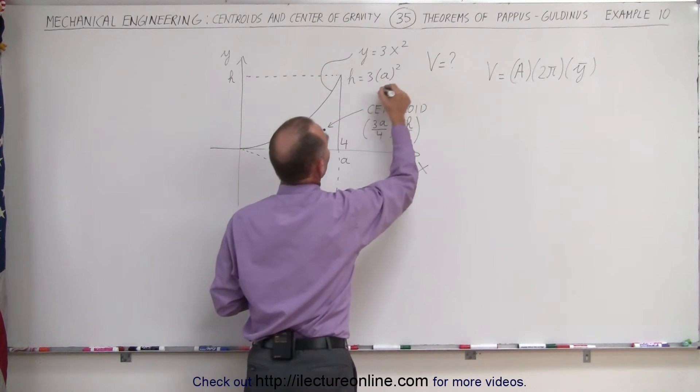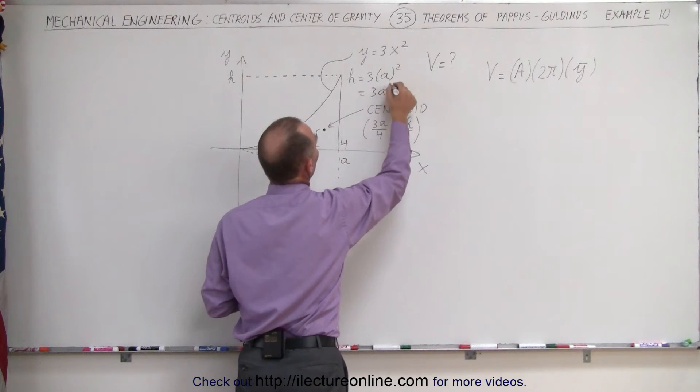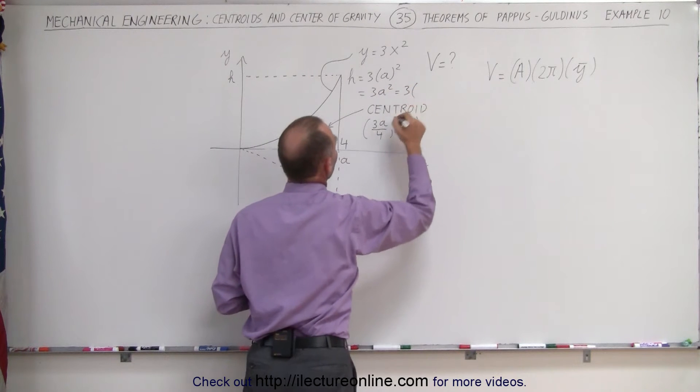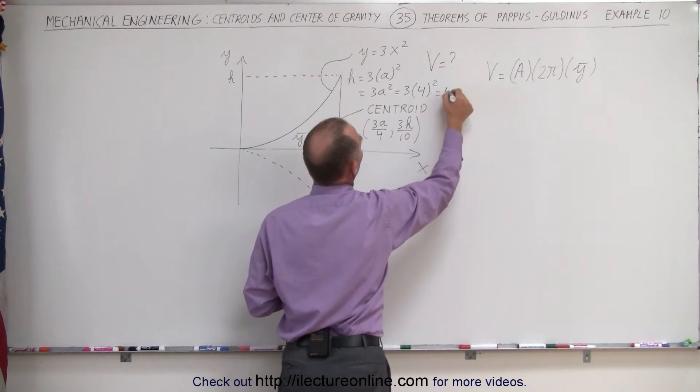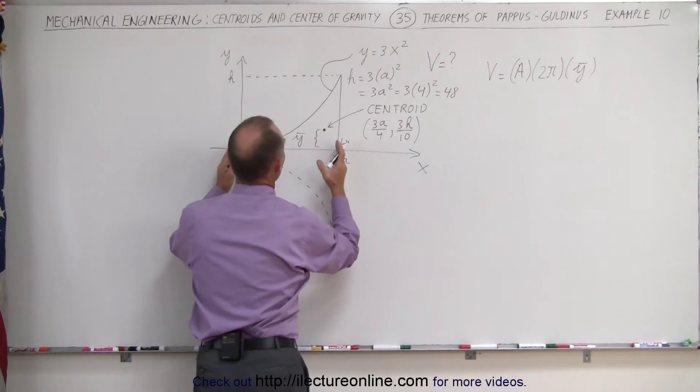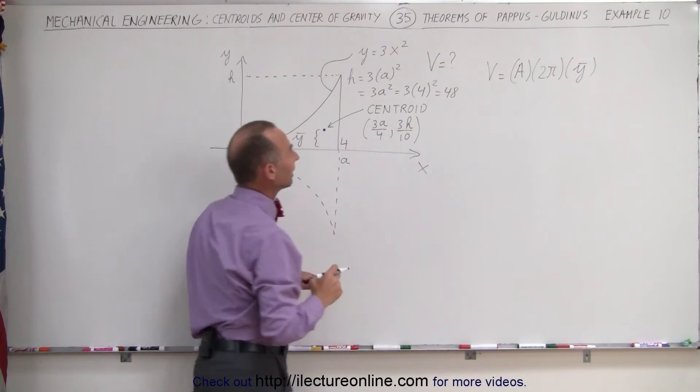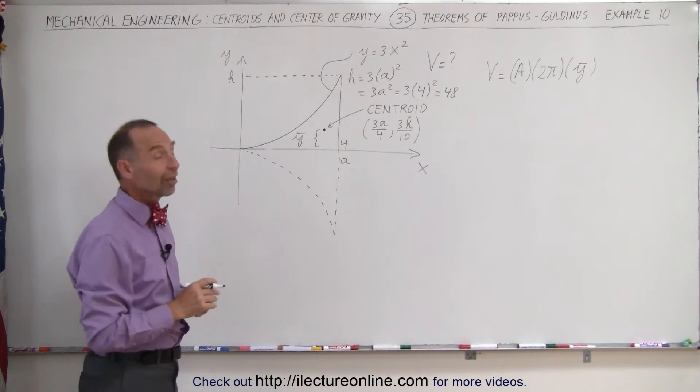In this case we replace for x, we replace a and that means that this is equal to 3a squared which is equal to 3 times 4 squared which is equal to 16 times 3 or 48. So the height here would be 48, the distance here would be 4 and that's how we'll be able to find the centroid.